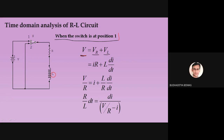The voltage V distributes itself: V equals VR plus VL. According to Ohm's law, VR equals I times R, where I is the current. Since R and L are in series, the same current flows through the inductor. The voltage across the inductor is L·di/dt. So: IR + L·di/dt = V.